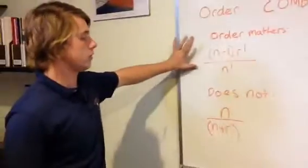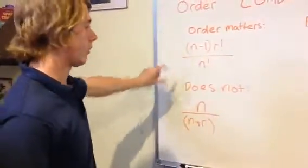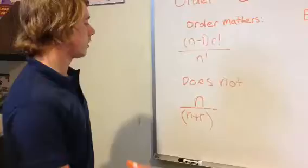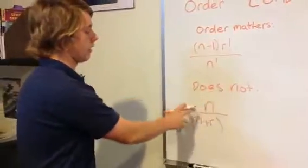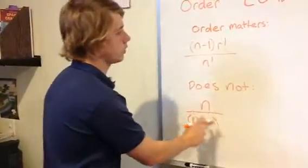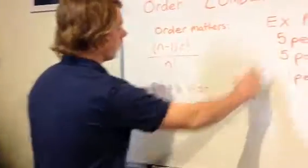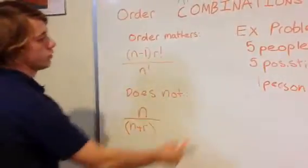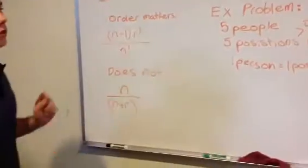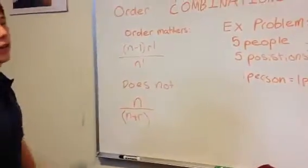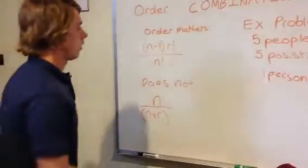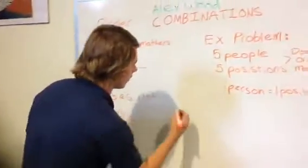Let's start this equation out. Order definitely matters for this one, and I'll show you why in a minute. Because if you were going to just do order does not matter, then you would have N, which is your 5 people, and R, which is your 5 positions. The first number you usually see in the equation is your N, and the second number is your R. You would have 5 people.